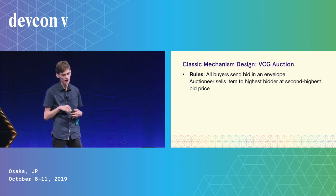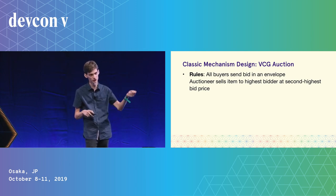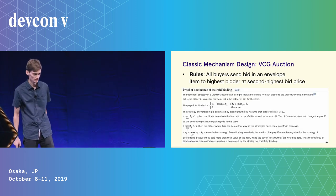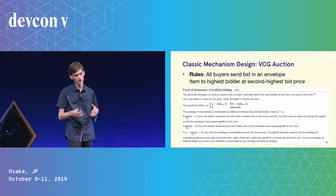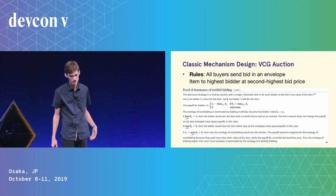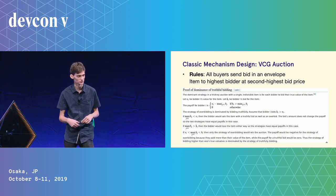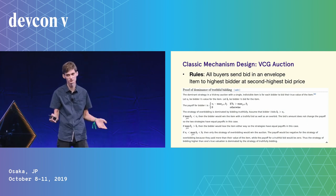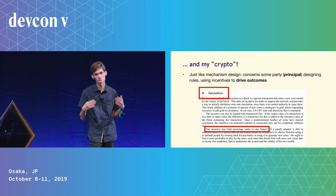In VCG, all buyers send a bid in a sealed envelope to the auctioneer. At the end, the auctioneer opens it — the winner is the highest bidder, but they pay the second highest price. This model is used commonly in ad sales. You can mathematically prove that the best strategy for any buyer is to bid their true valuation. Overbidding or underbidding both lose money. This is called a dominant strategy truthful mechanism — a buyer's best strategy is always to tell the truth.